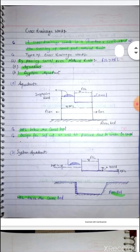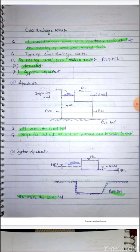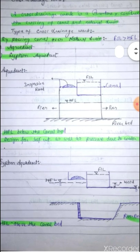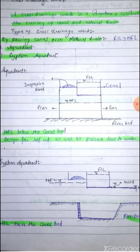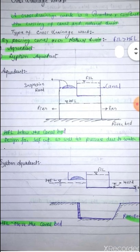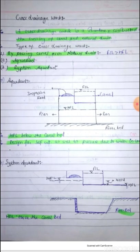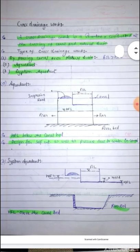In an aqueduct, the HFL — that is, the high flood level of the drain or river — is much below the bottom of the canal. As you can see in the figure, the high flood level of the river is much below the bottom of the canal. This type of arrangement is called aqueduct. The drainage water flows freely under gravity in an aqueduct. Aqueduct is designed for self-weight as well as pressure due to the water in the canal.